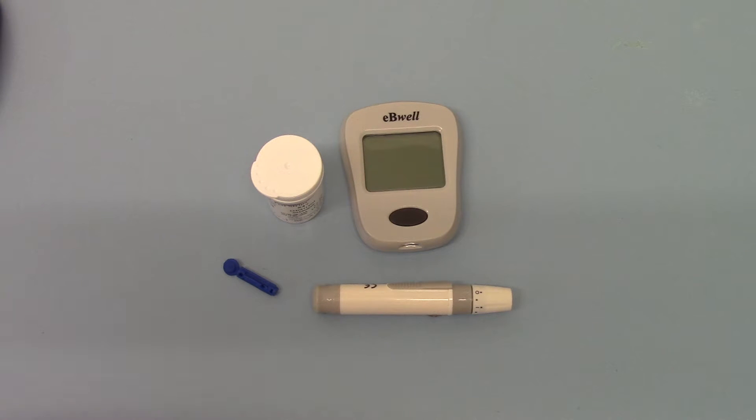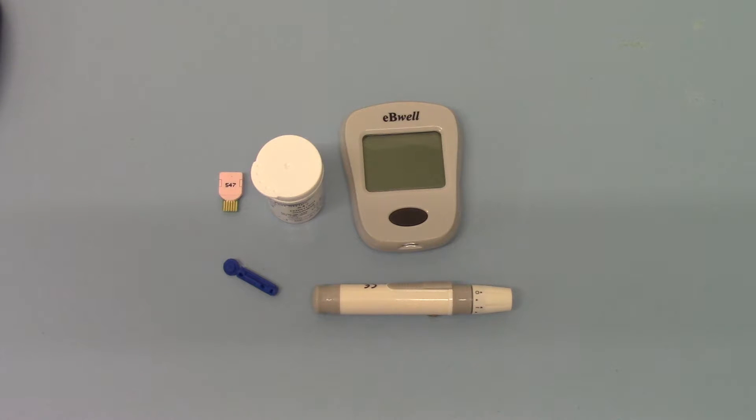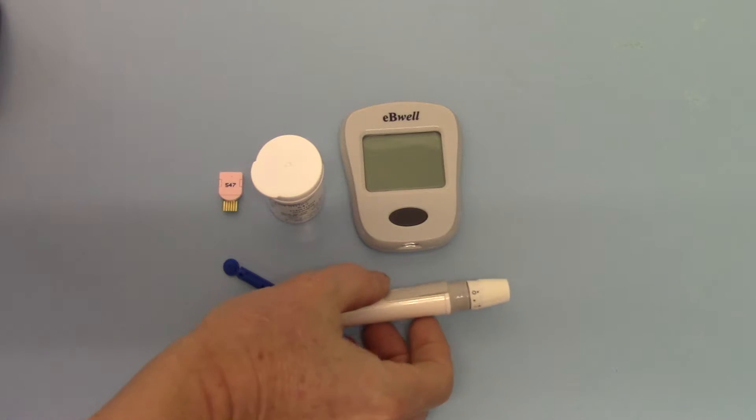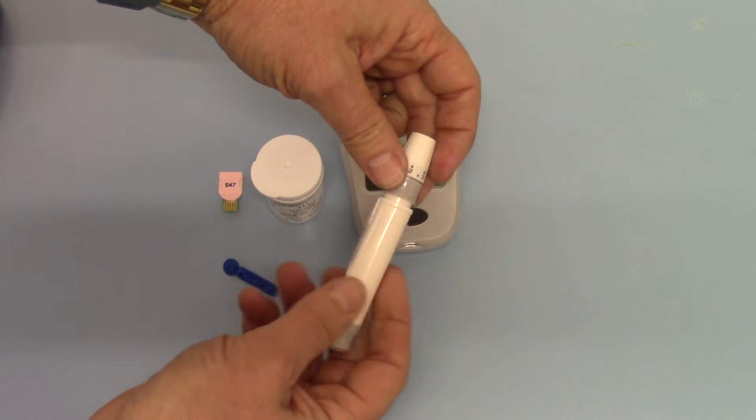This meter has also been coded with the 547 code chip in the last video so it's got all the information on board ready to do a test. Now what we're going to do here is demonstrate the auto lancing device and how to prime that.